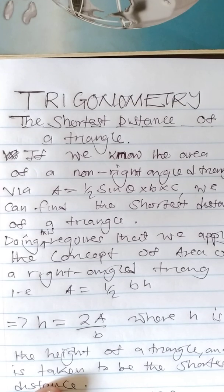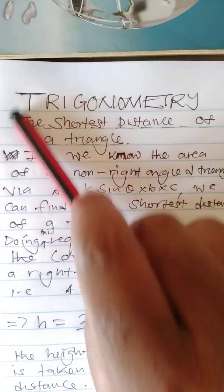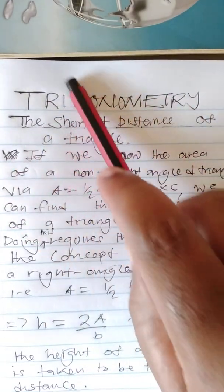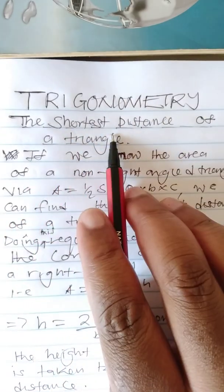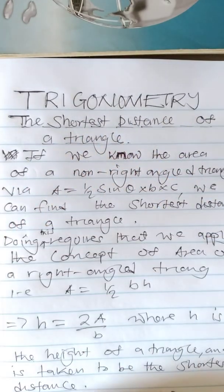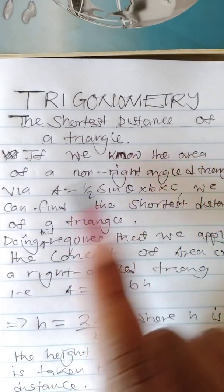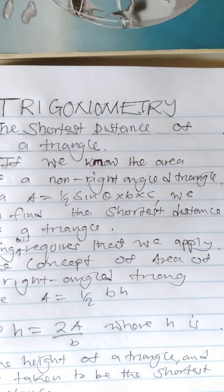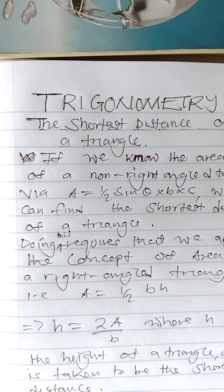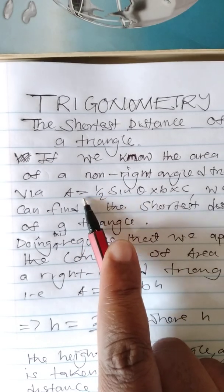Hello friends, welcome to our channel where we are presenting lessons in mathematics. In this presentation we continue dealing with trigonometry. Our interest is to look at how we can get the shortest distance of a triangle. Now we are saying if we know the area of a non-right-angle triangle via this formula...